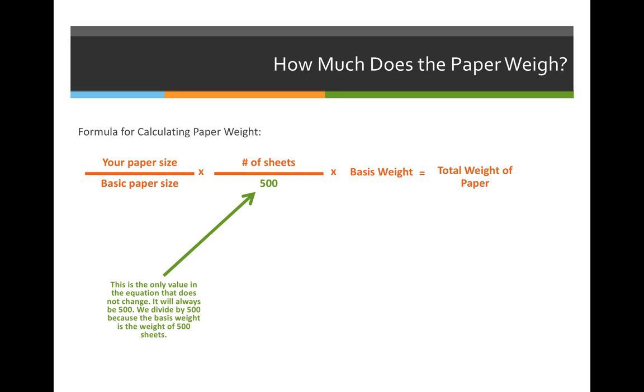In our class, we're only concerned with three categories, and that is coverweight stock, which is 20 by 26 inches for its basic size, stationary stock, which would be bond and writing paper, that has a basic size of 17 by 22 inches, and then anything that goes on the inside of a book would be 25 by 38. Examples of that would be offset, opaque, text, and book stock.